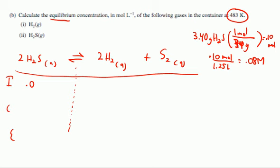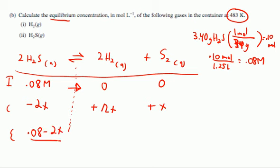That's going to be my initial concentration of H2S. I know this is going to be 0. I know this is going to be 0. It's going to shift to the right because of that. This is going to be minus 2X. This is going to be plus 2X. And this is going to be plus X. Therefore, at equilibrium, 0.08 minus 2X, 2X, and X.